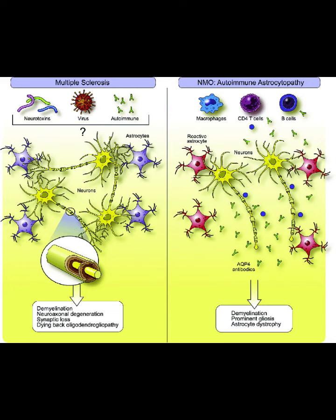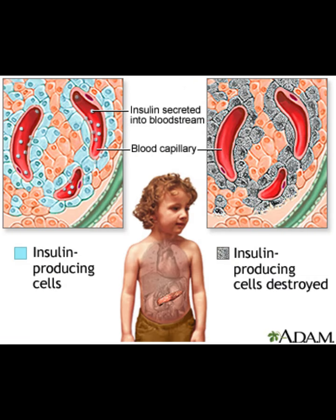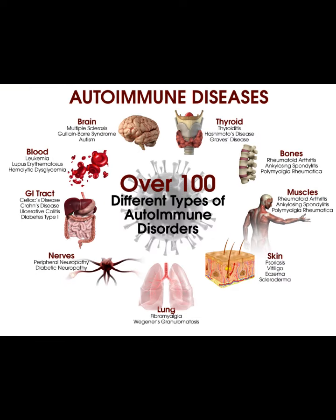In an autoimmune disease, T cells and B cells are unable to distinguish the body's own tissues from foreign substances, so they attack the body's own tissues. For instance, in rheumatoid arthritis, an immune response attacks the synovial lining of joints. In multiple sclerosis, it attacks the myelin sheath around neurons in the central nervous system. In type 1 diabetes, the insulin-producing cells of the pancreas are attacked and destroyed.